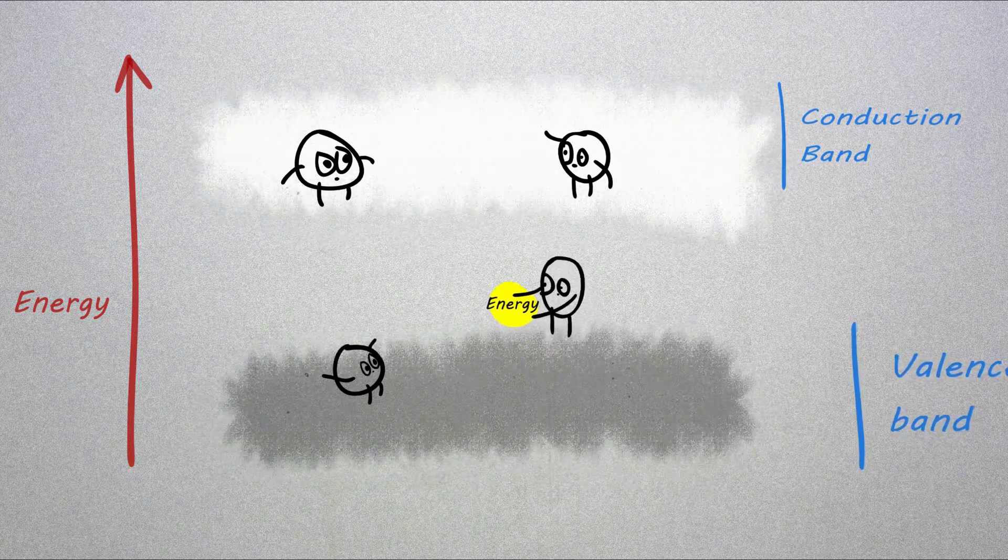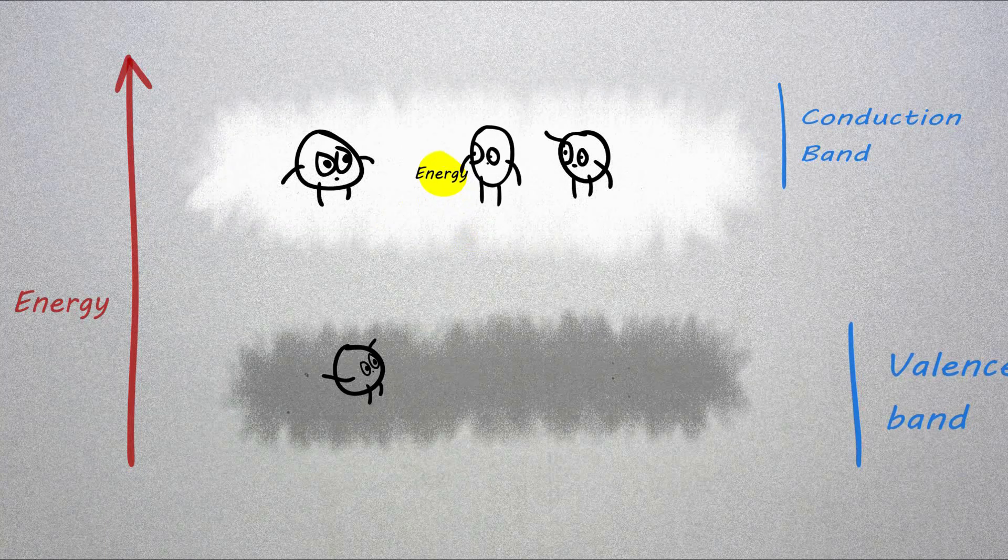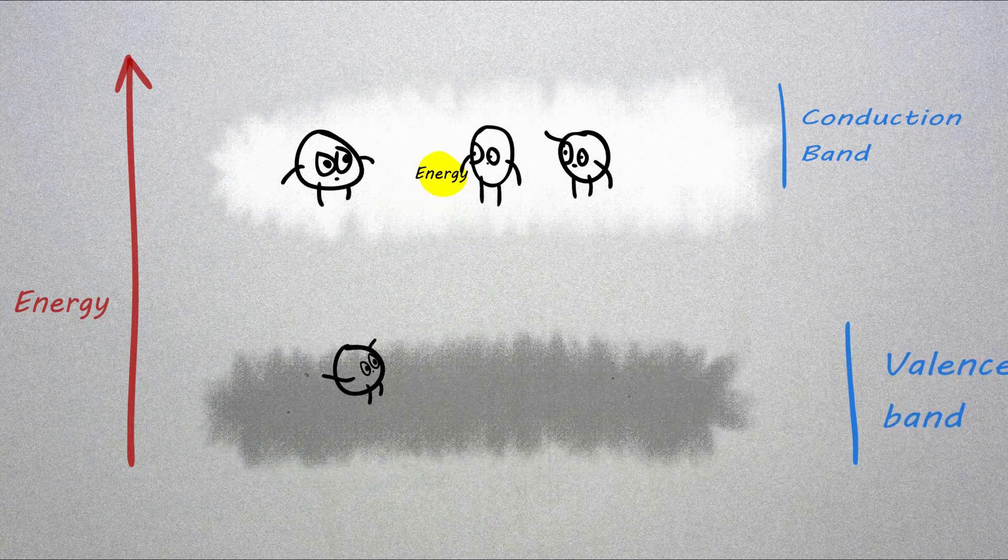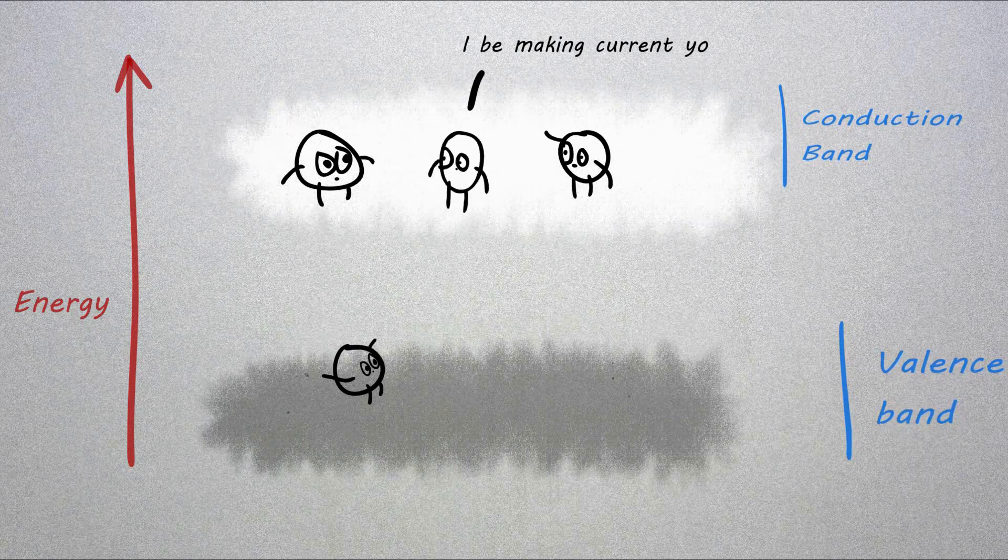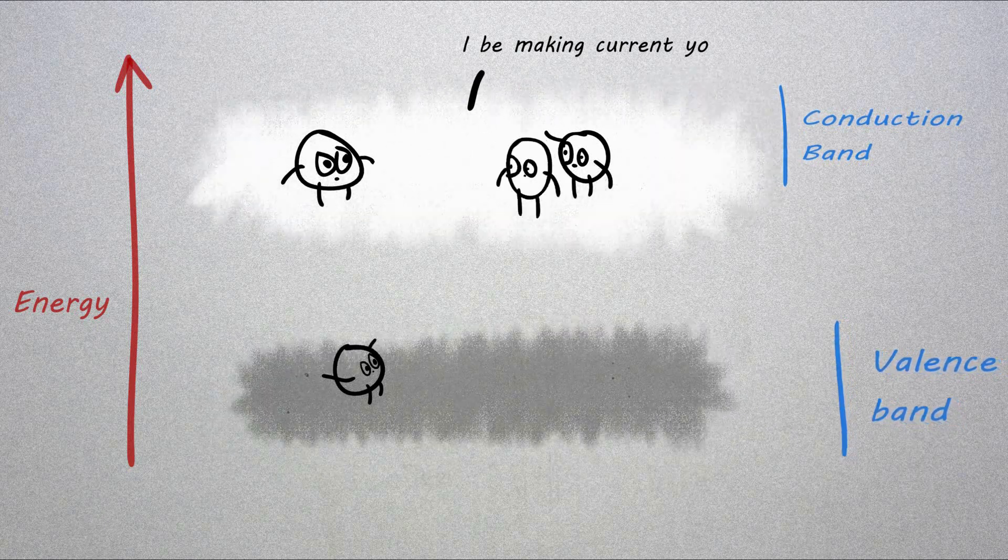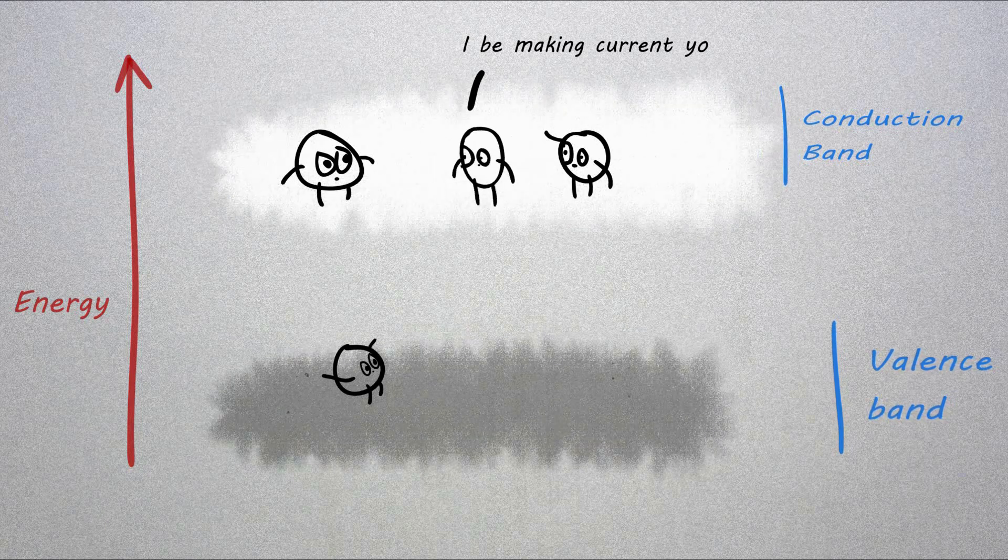At the point when electrons are in these orbitals, they have enough energy to move freely in the material. This movement of electrons makes electrical flow. The valence band is an energy band formed by a series of energy levels containing valence electrons.